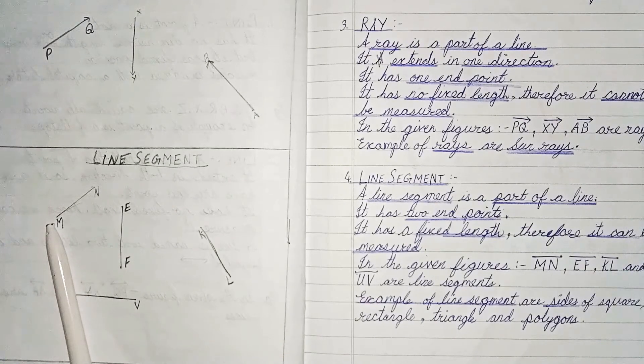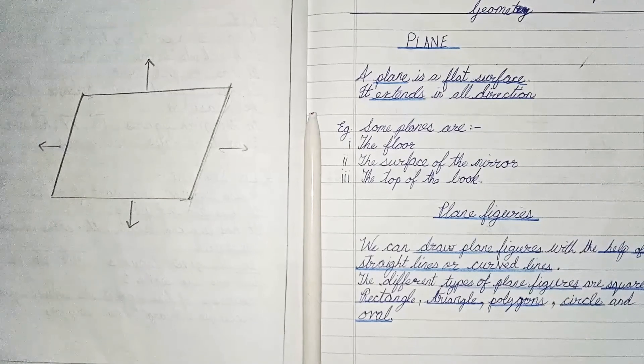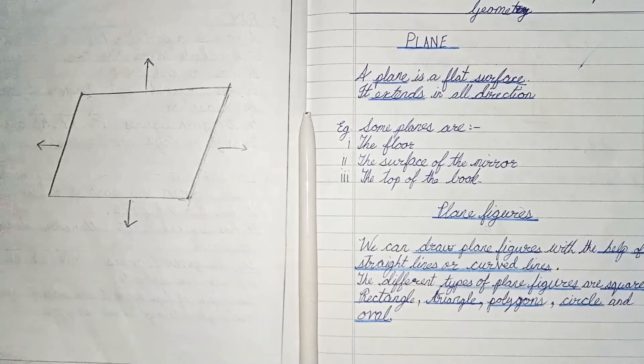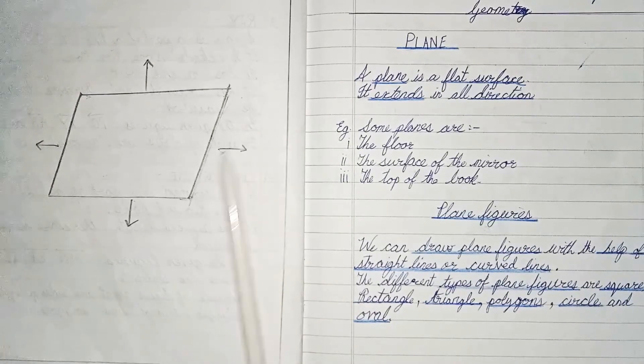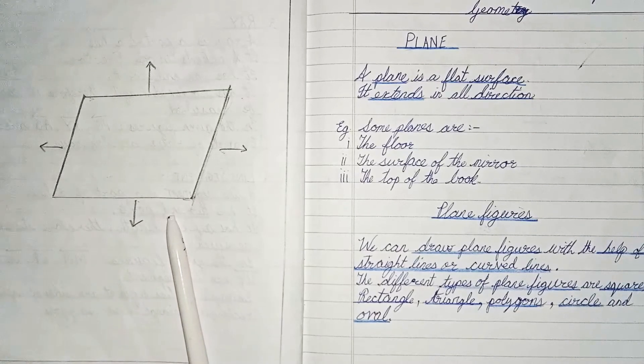Next we will discuss about plane and plane figures. What is a plane? A plane is a flat surface. It extends in all directions. And plane figures we can draw with the help of straight lines or curved lines.